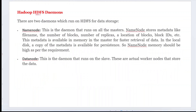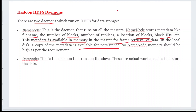In Hadoop HDFS, we have daemons — a daemon is nothing but a process. There are two types of daemons: name nodes and data nodes. In the name node, we store only the metadata information: file name information, block information, how many copies of data nodes exist, the location of each block, and the block IDs. All that information is stored in the name node, and this metadata is available in memory for faster retrieval.